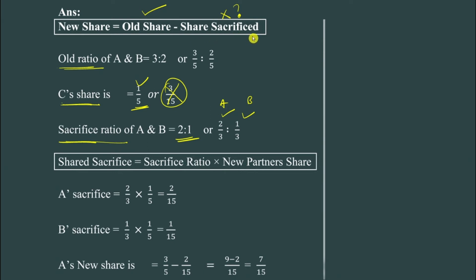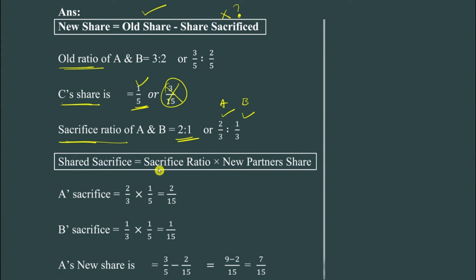The share sacrificed is equal to the sacrifice ratio multiplied by the new partner's share. So the formula is: share sacrifice = sacrifice ratio × new profit share.